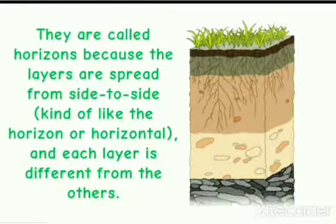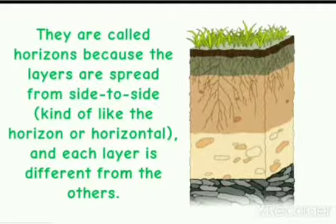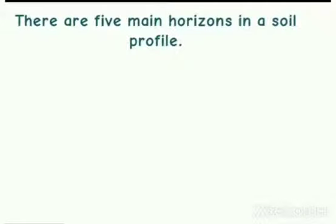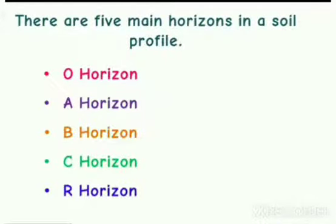They are called horizons because the layers are spread from side to side, and each layer is different from the other. There are five main horizons in a soil profile: O horizon, A horizon, B horizon, C horizon, and R horizon.